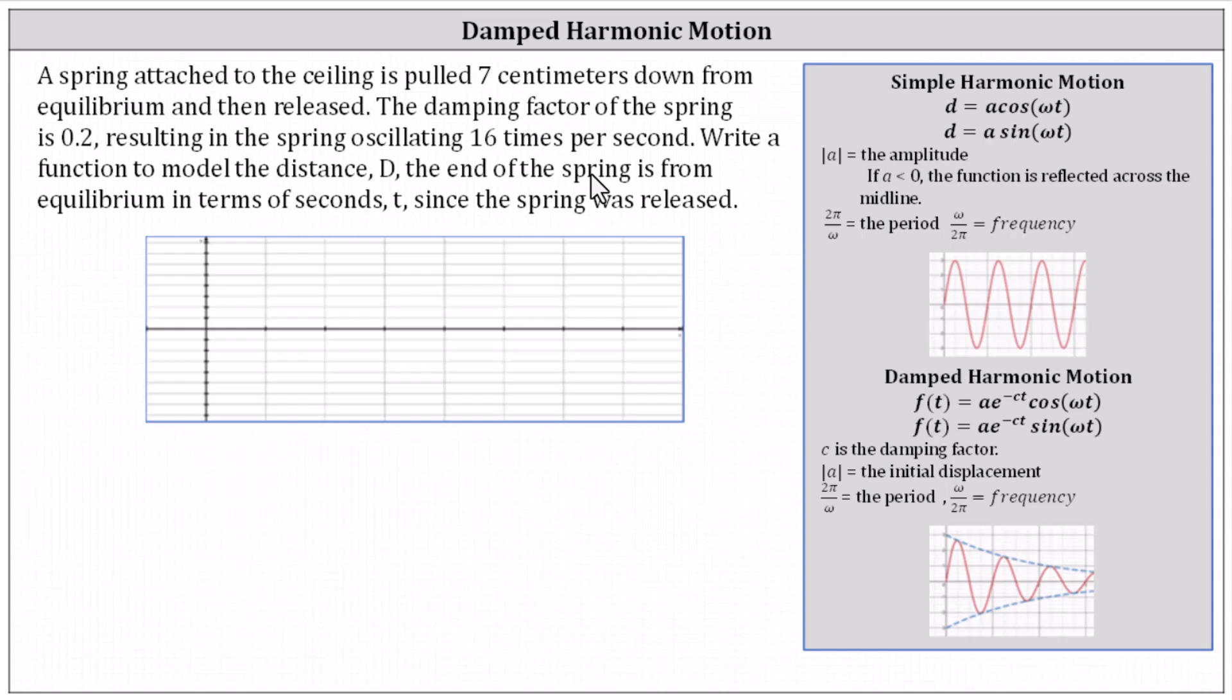Because the spring has a damping factor, we know we have damped harmonic motion, where as time increases, the amplitude decreases. We can use either of these two functions f of t to model the damped harmonic motion, where c is the damping factor, and the absolute value of a equals the initial displacement.